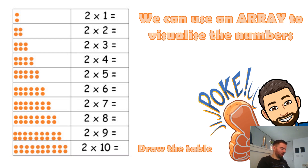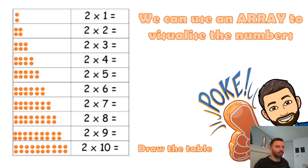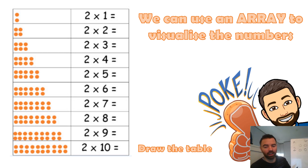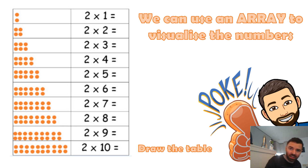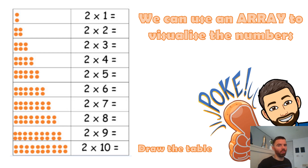So a challenge for you — can you draw for me the array for two times four? Give it a go. Two times four means two groups of four: one, two, three, four — one, two, three, four. Two groups of four. And then all together, we count it up: one, two, three, four, five, six, seven, eight. Answer is eight. Two times four is eight. So arrays are a really good way to visualize the number, and if you're ever stuck and you're like, oh, two times seven, I can't remember what that is — can you draw it as an array?